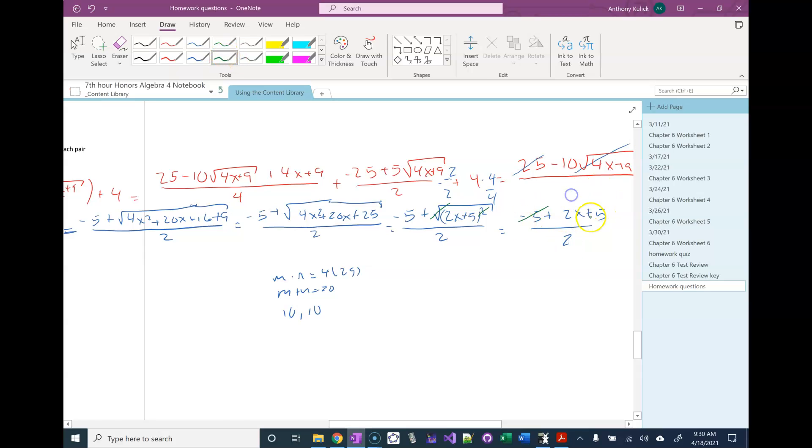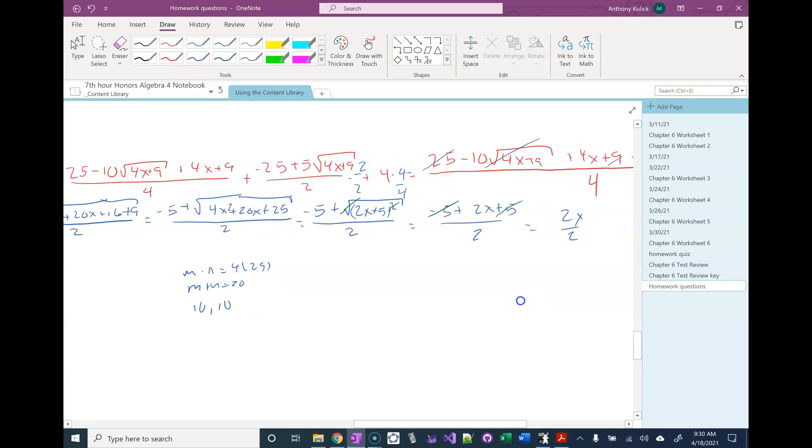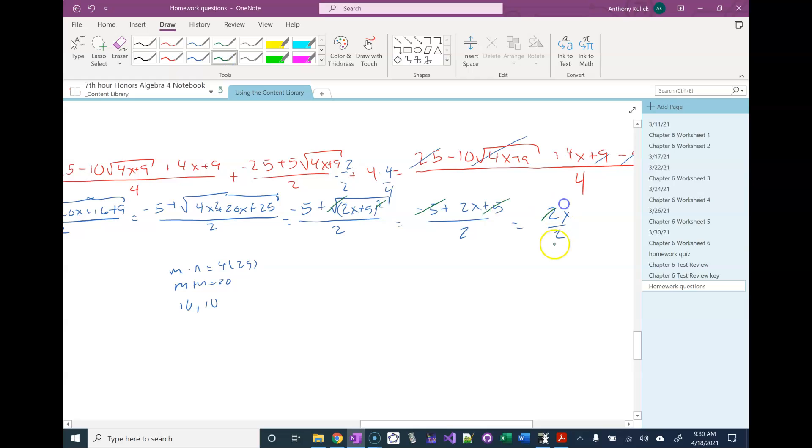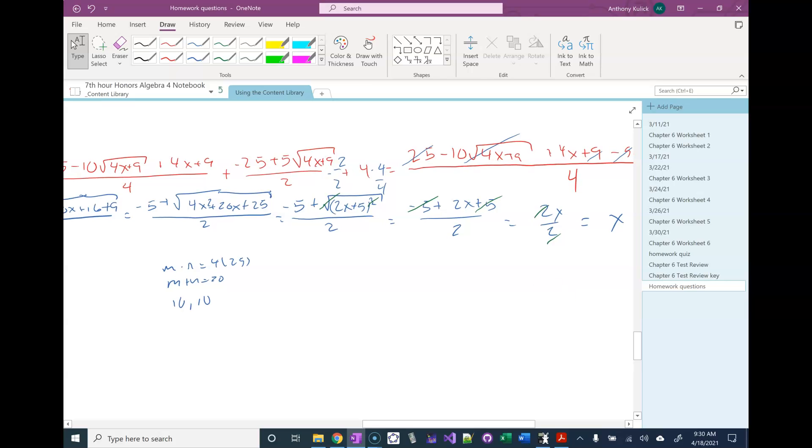If I combine my like terms, the negative 5 and the positive 5 give us 0. So I'm left with just 2x over 2. And if we reduce, that just becomes x, which is what we wanted. And there we go.